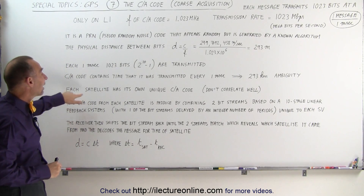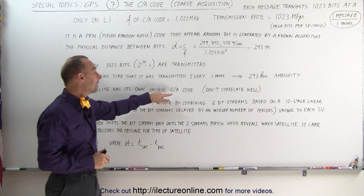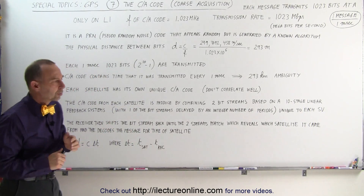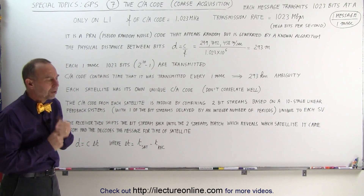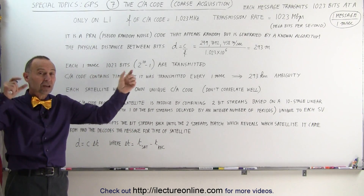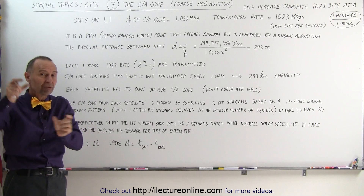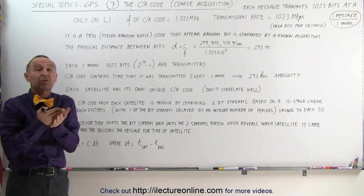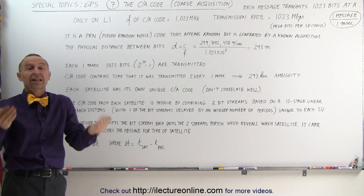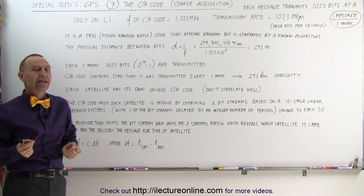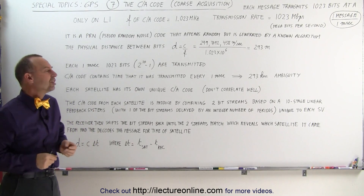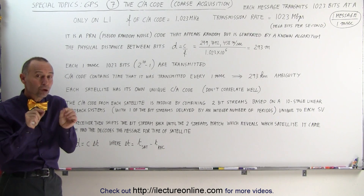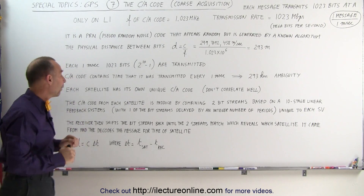Each satellite has its own unique Coarse Acquisition code. What that means is that when we have the Coarse Acquisition codes coming from different satellites, we need to be able to tell which satellite it came from. That's an ingenious way of doing that so that the code can be discerned.